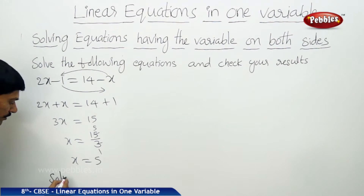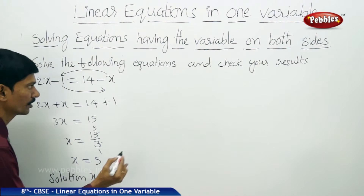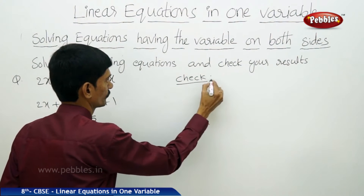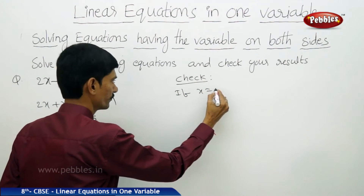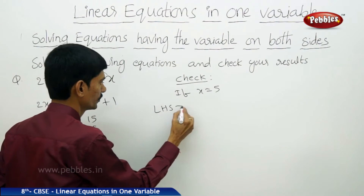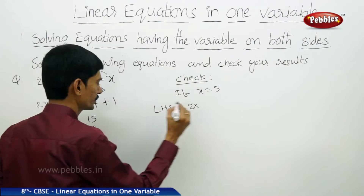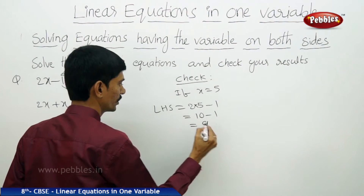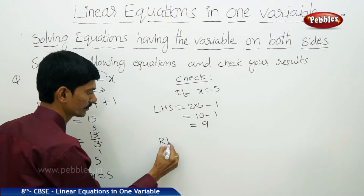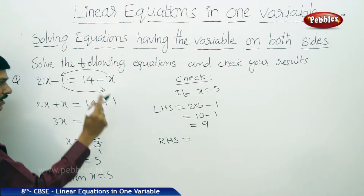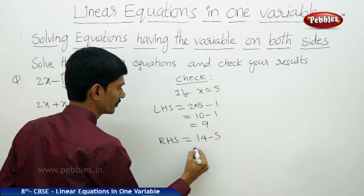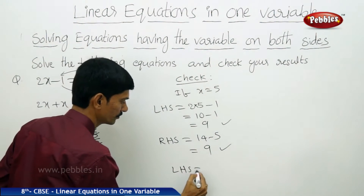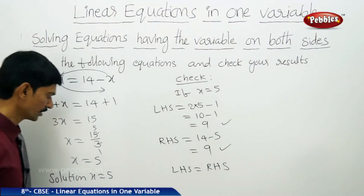The solution of the given linear equation is x equals to 5. Let us check: if x equals 5, LHS is 2x minus 1 equals 2 into 5 minus 1, which is 10 minus 1 equals 9. RHS is 14 minus x equals 14 minus 5 equals 9. Both LHS and RHS are equal, so our solution x equals to 5 is correct.